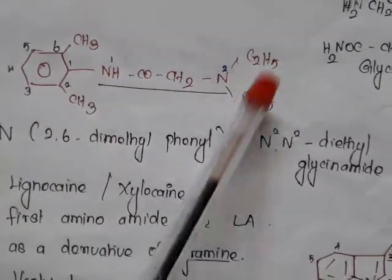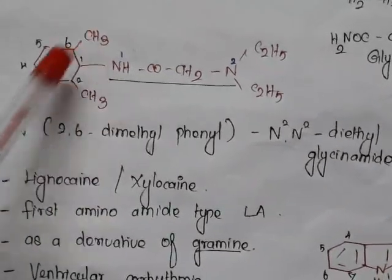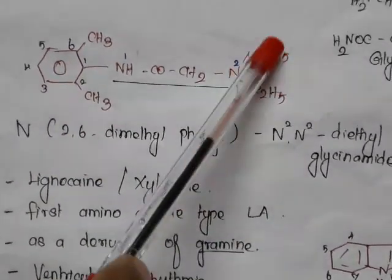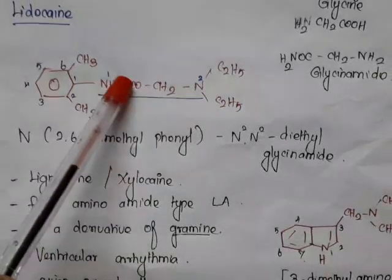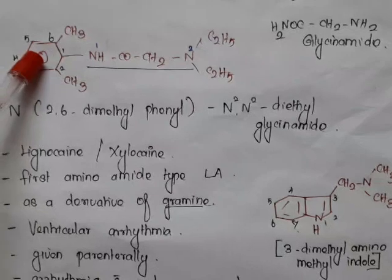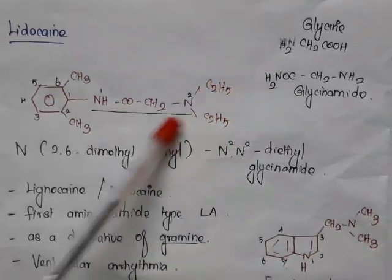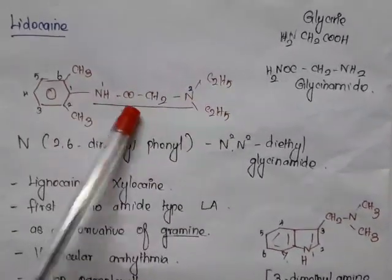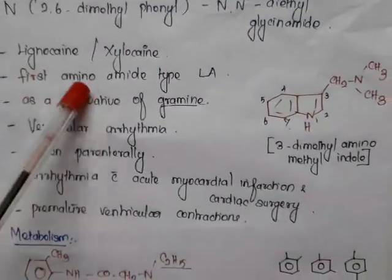Nitrogen 1 and nitrogen 2 are identified. With the first nitrogen, the 2,6-dimethylphenyl group is attached. With the second nitrogen, a diethyl group is attached. So the chemical name is N2,N2-diethylglycine amide as the parent, with 2,6-dimethylphenyl on N1. It is otherwise called lignocaine or xylocaine, and it is the first amino amide type of local anesthetic.